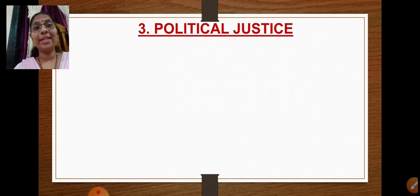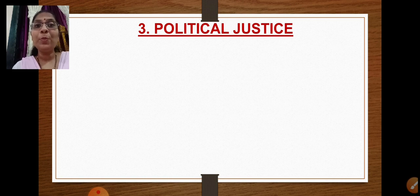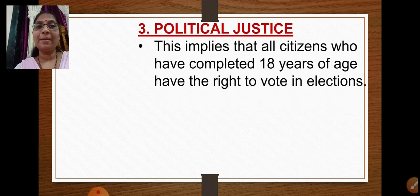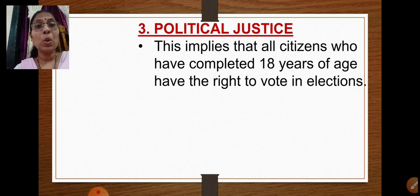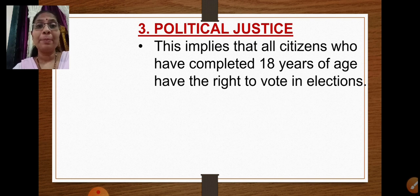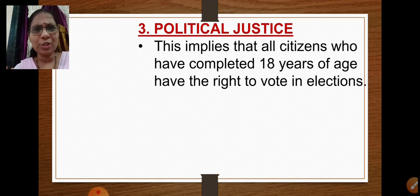Next is political justice. People often think politics is bad, but we humans have made it bad. Political justice implies that all citizens who have completed 18 years of age have the right to vote in elections. We elect our representatives — and it is the citizens who have completed 18 years of age who are entitled to cast their vote.